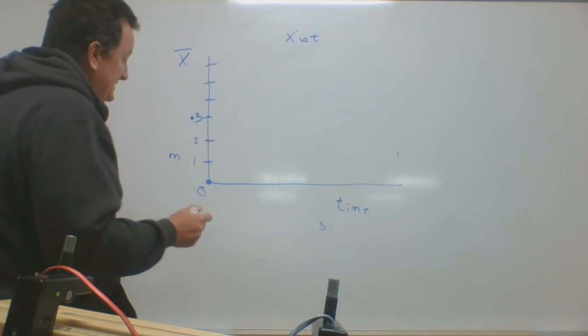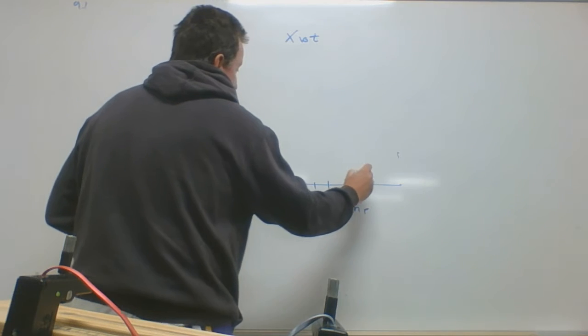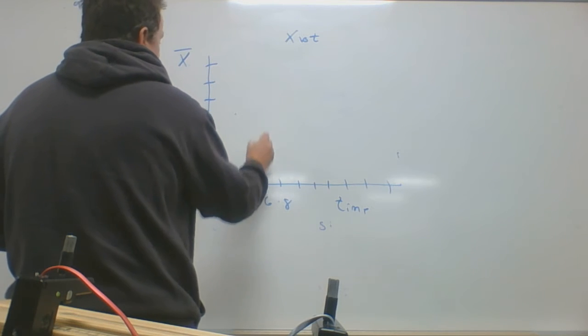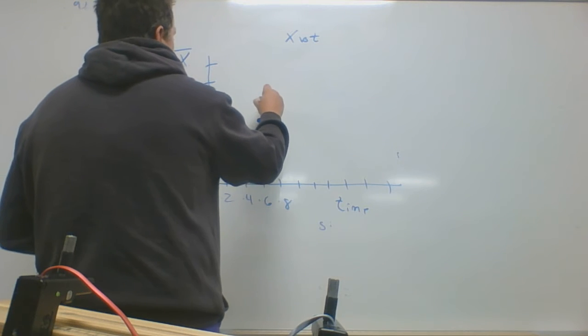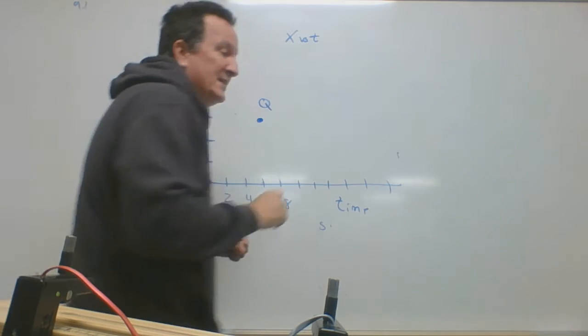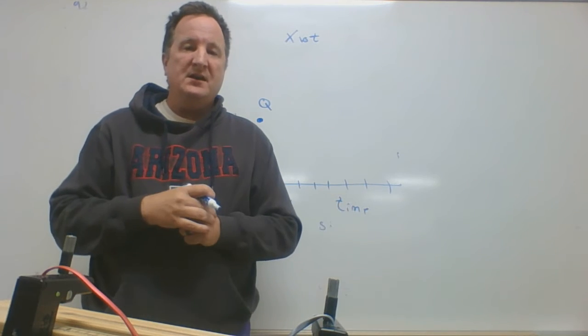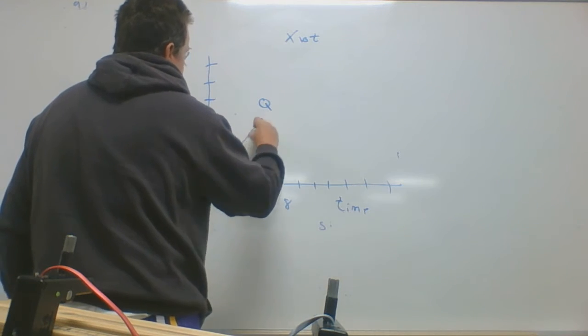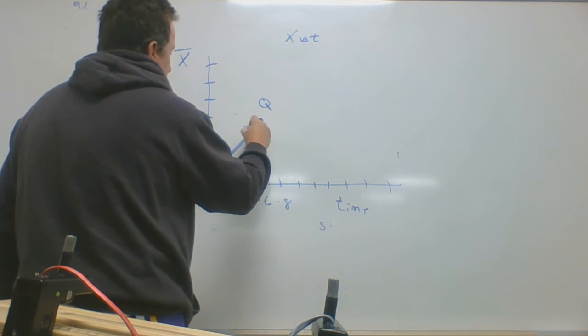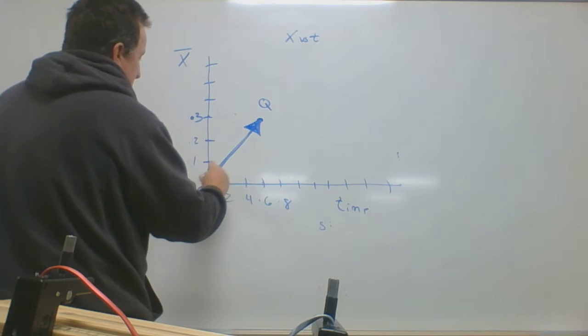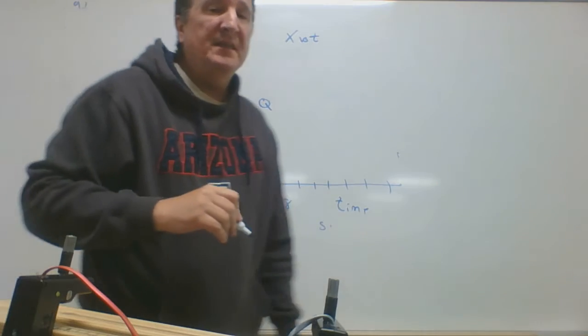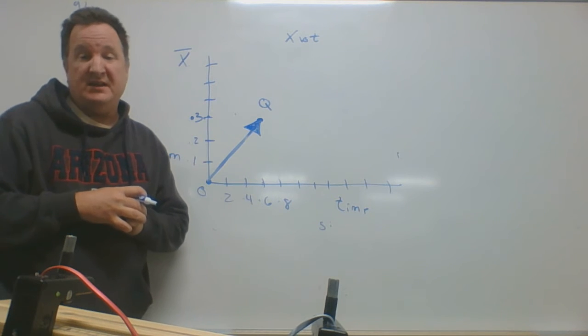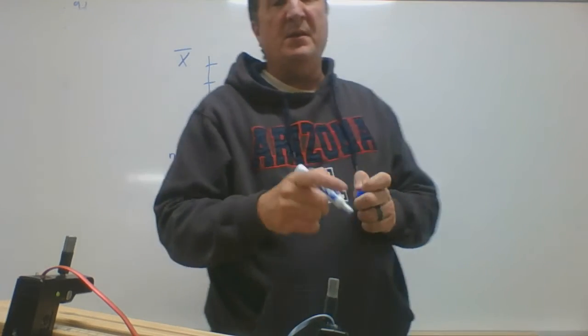So we have that time. These are 0.2, 0.4, 0.6, 0.8. So around 0.6, we have a point, and we'll call this Q. Point Q occurred at 0.6 seconds. That position is a vector, so we'll go from the origin to 0.6 and make it a nice big arrow. The arrow represents the direction. This represents the distance, which is 0.3. That's my first vector from the origin to Q, representing that position.